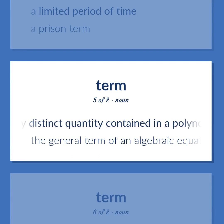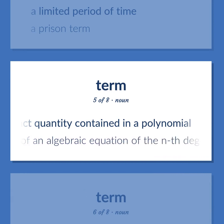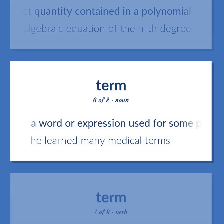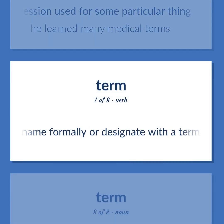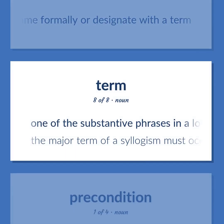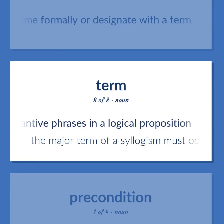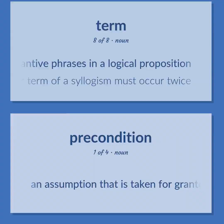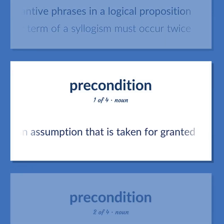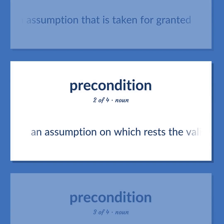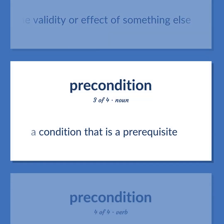Term: any distinct quantity contained in a polynomial — 'The general term of an algebraic equation of the Nth degree.' A word or expression used for some particular thing — 'He learned many medical terms.' Name formally or designate with a term. One of the substantive phrases in a logical proposition — 'The major term of a syllogism must occur twice.' An assumption that is taken for granted. An assumption on which rests the validity or effect of something else.